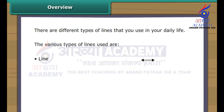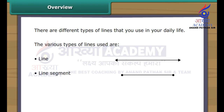Line: A line has no beginning and no end. You can stretch a line infinitely in both directions. Line segment: A line segment has a beginning and an end. Ray: A ray has a starting point but no end.